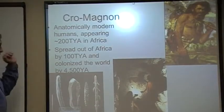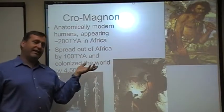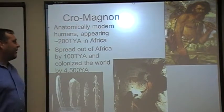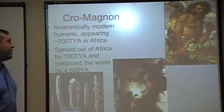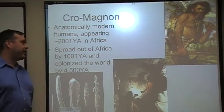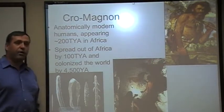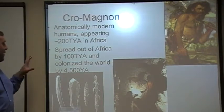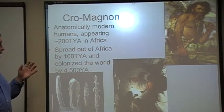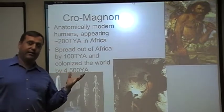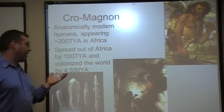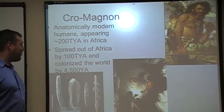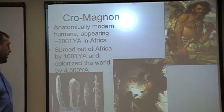When we get to the first anatomically modern humans, they're given the name Cro-Magnon. Essentially they're you and I, and we start seeing this in the fossil record somewhere around 200,000 years ago in Africa. They're going to spread out of Africa by about 100,000 years ago, and very quickly — at least in biological terms — they're going to colonize pretty much the entire world minus Antarctica by about 4,500 years ago.